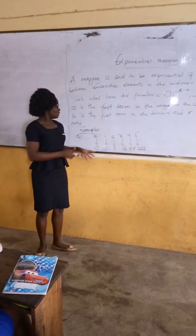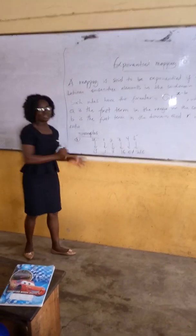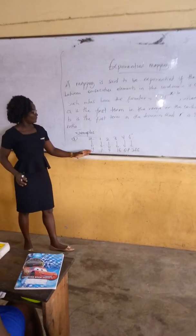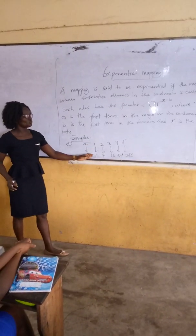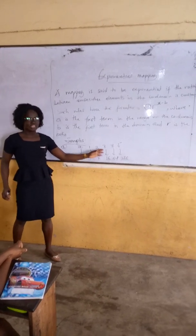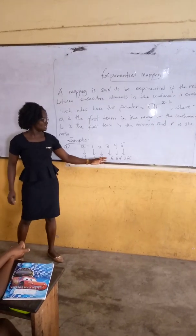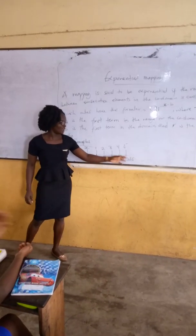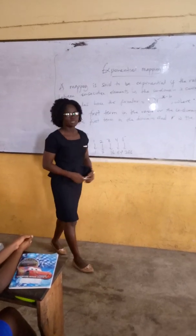Let's do the formula. We have an example like this: x maps to y, where 1→1, 2→4, 3→16, 4→64, and 5→256.